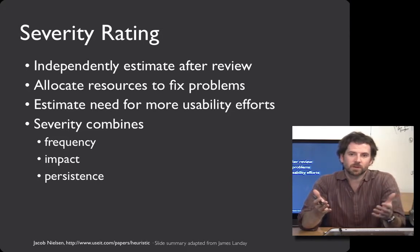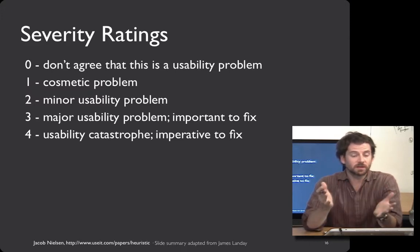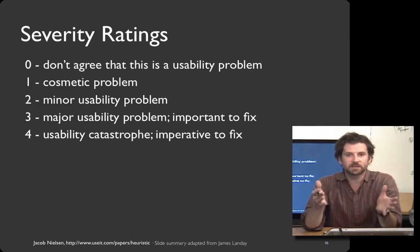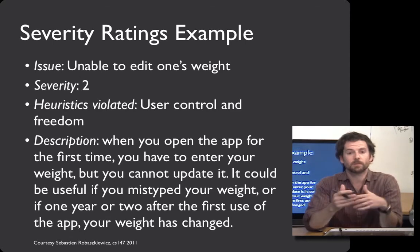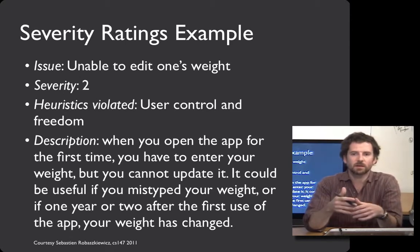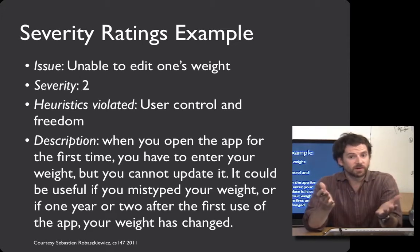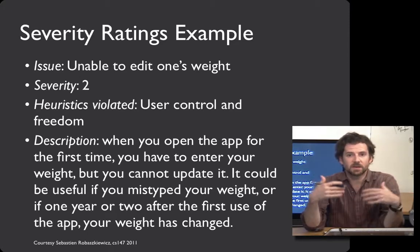Here's the severity rating system that Nielsen created, ranging from zero to four. Zero means at the end of the day your evaluators decide it's not actually a usability problem, all the way up to something really catastrophic that has to get fixed right away. Similarly, there are going to be things like misaligned text which may be inelegant but aren't a deal killer. Here's an example: RTA Robbie, when taking CS147, walked through a mobile interface with a weight-entry element and realized that once you'd entered your weight, there was no way to edit it after the fact. He listed the issue, gave it a severity rating, identified the heuristic it violates, and described exactly what the problem is.